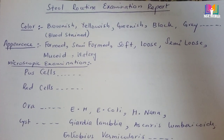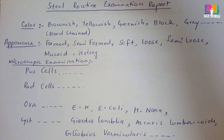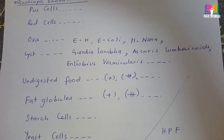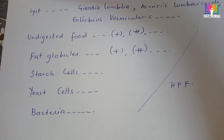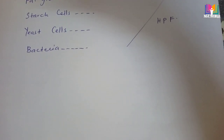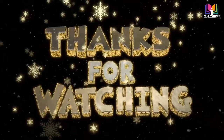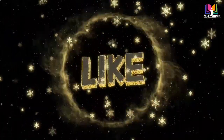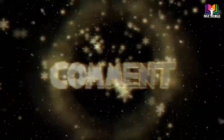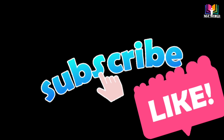So these are all the points to write in a stool examination report: color, consistency or appearance, and microscopic examination. If you find these things in microscopic examination, write the exact findings. If not found, you write 'nil', 'not seen', or 'not found' in front of each term. All this reporting is done under high power field (HPF) microscope examination. I hope you understand how to make a stool examination report manually or on a computer. Thank you so much.